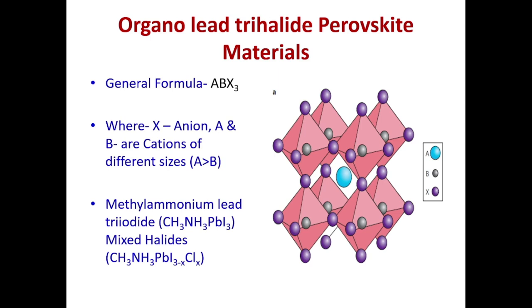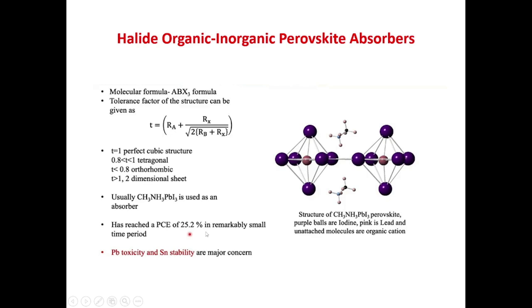They are also less sensitive to impurities than expensive crystalline semiconductors such as gallium arsenide. As I already discussed, this ABX3 is very important here. This is the general formula and this complete structure is described in such a way that these halide organic-inorganic perovskite absorbers have the molecular formula ABX3, where X is an atom of halide - may be iodine, chlorine, bromine, or fluorine. But fluorine doesn't work because of the tolerance factor.